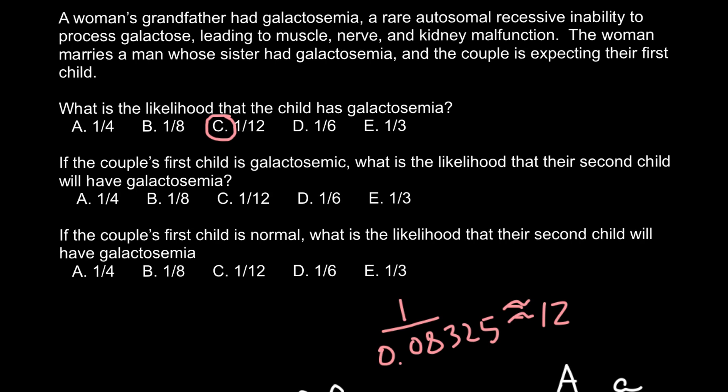Now let's answer the remaining questions — they will be much easier. Question two: if the couple's first child has this genetic disorder, what is the likelihood that the second child will also have this genetic disorder? The answer is also 1/12.